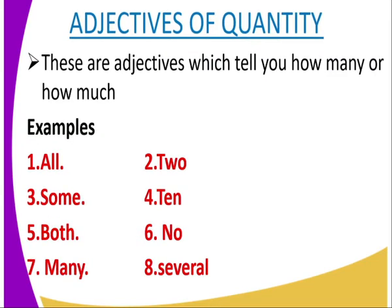Adjectives of quantity talk about number — they tell us how much or how many. Examples of such words include: all, some, both, many, two, ten, no, and several. These are the words used with adjectives of quantity.